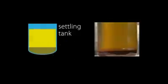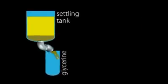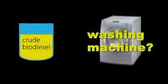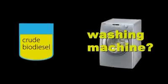Next, the glycerin layer is drained off for use in compost production or for waste collection. Then the remaining crude biodiesel is transferred into a washing machine to remove contaminants and any remaining production chemicals.